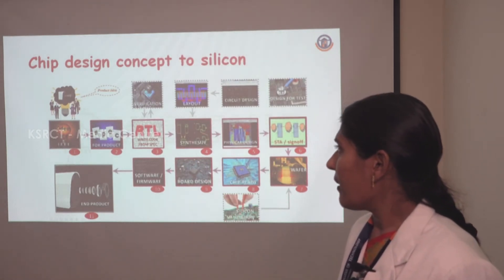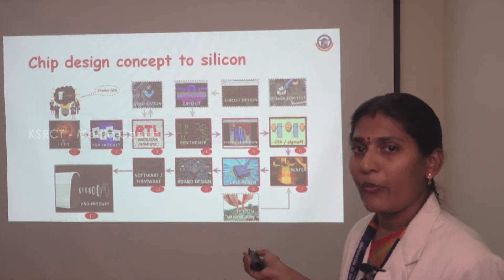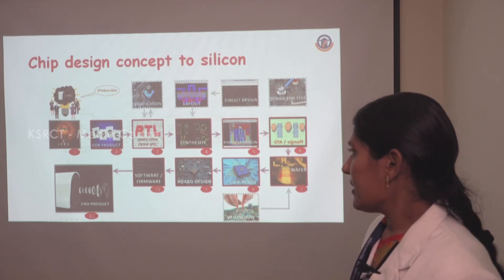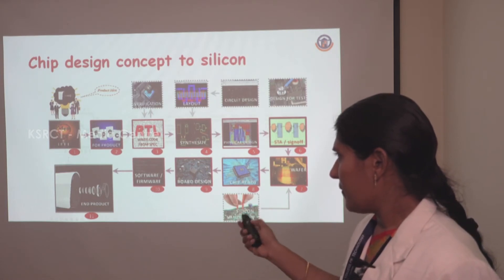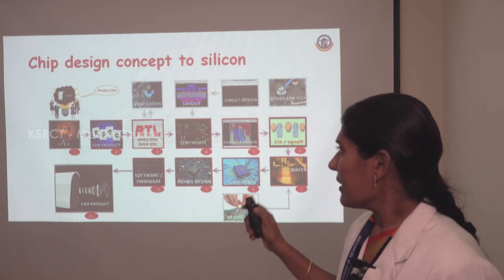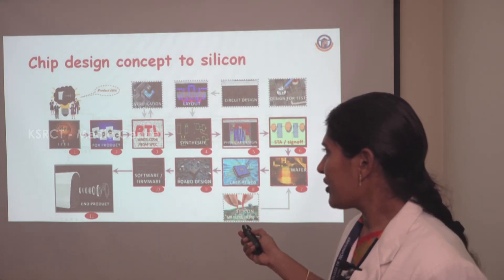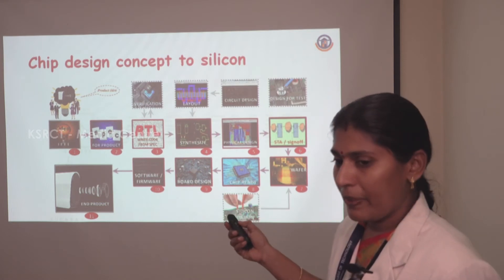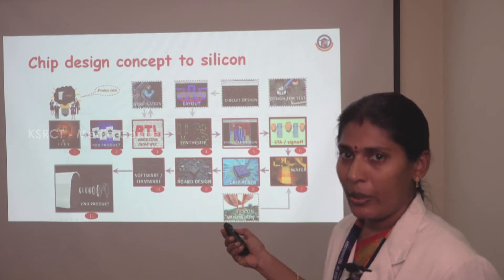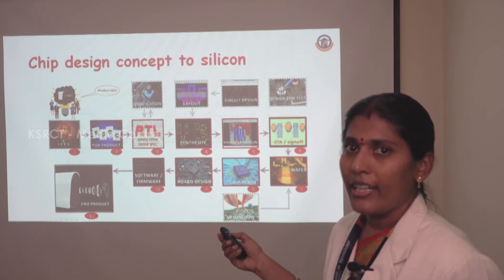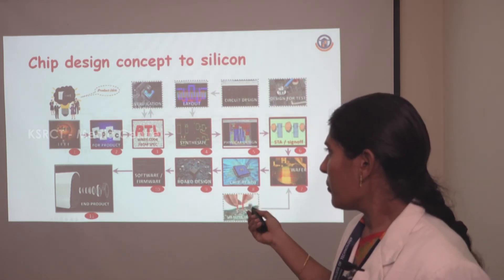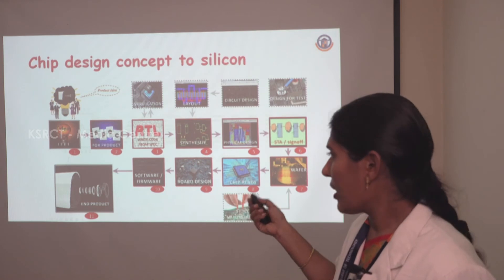This is another pictorial representation of the VLSI design flow — chip design from concept to silicon. The first step is to have an idea for our circuit. After fixing the idea, we enter the design entry step, where we define the specifications: clock frequency range, inputs, and outputs. Then we move to the RTL step — Register Transfer Logic.